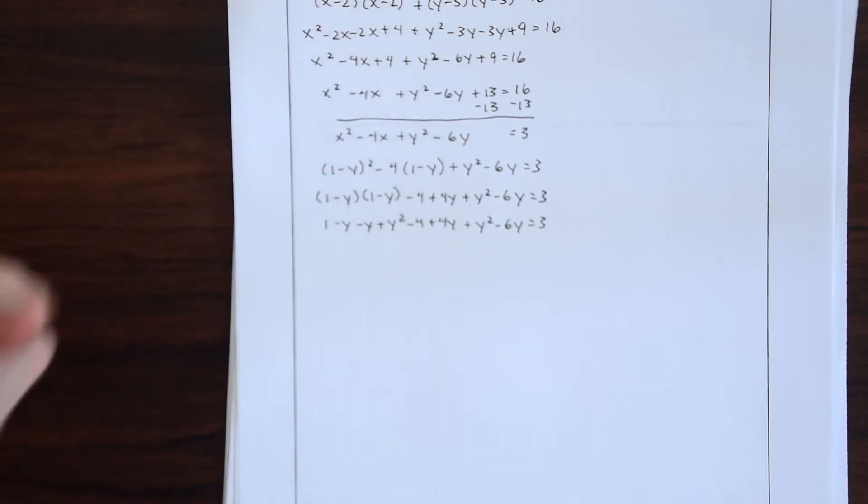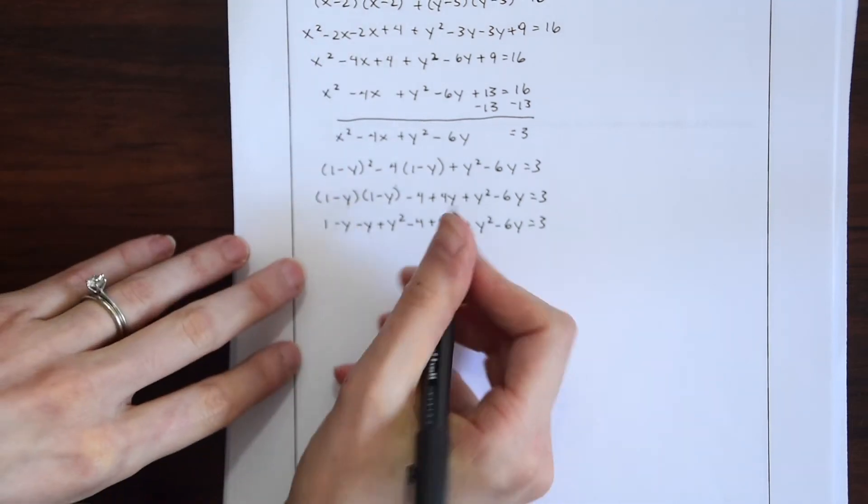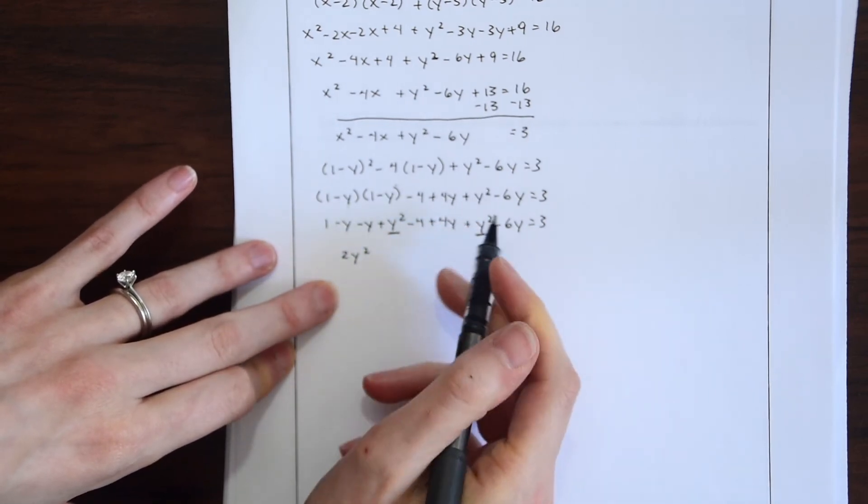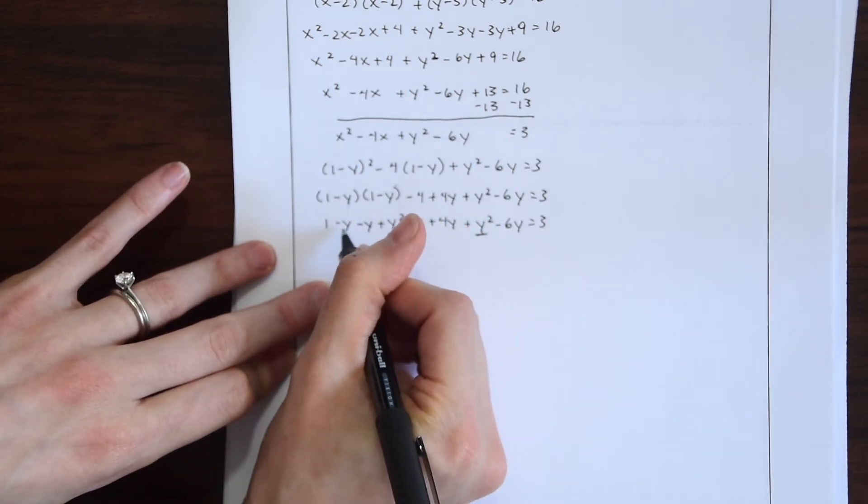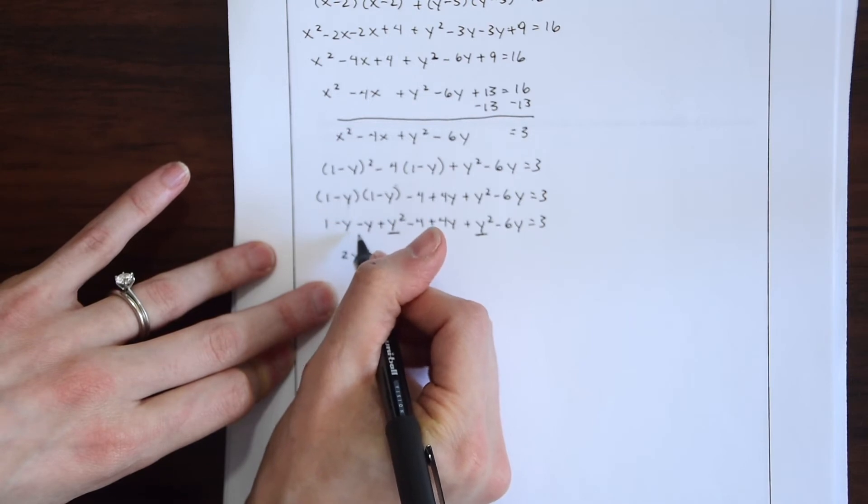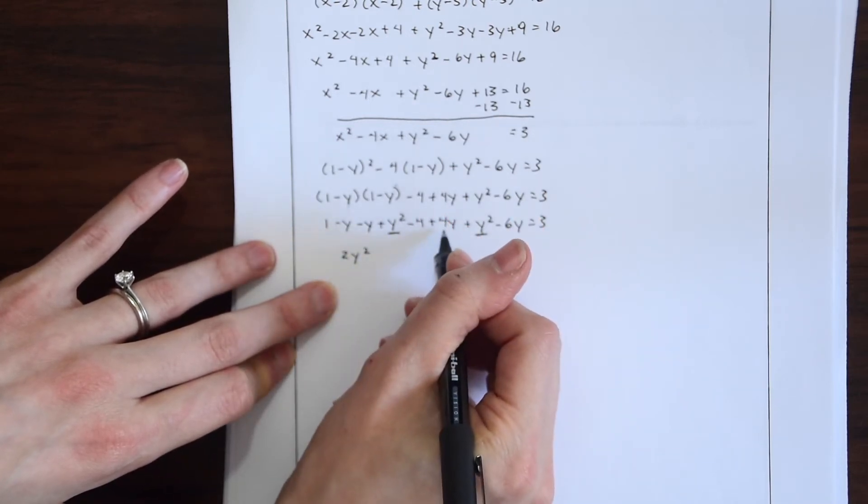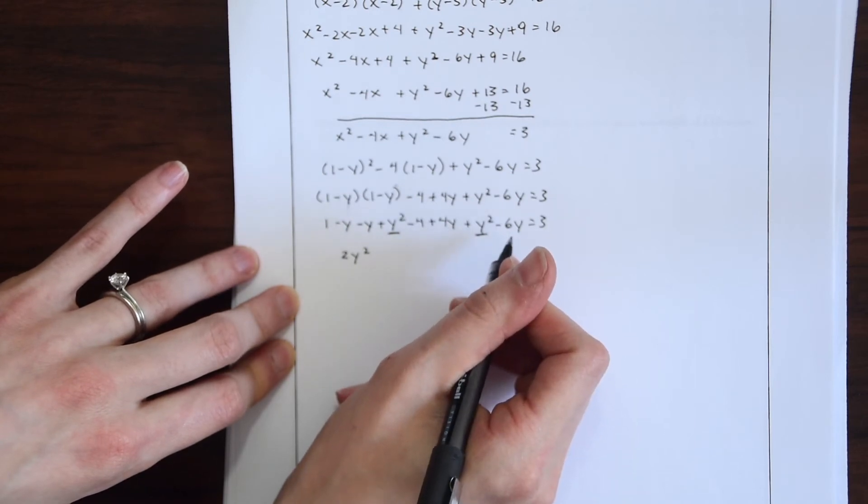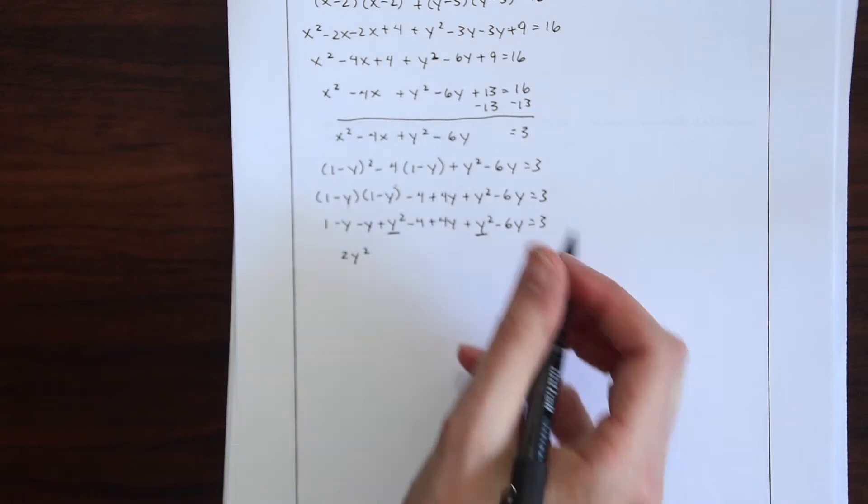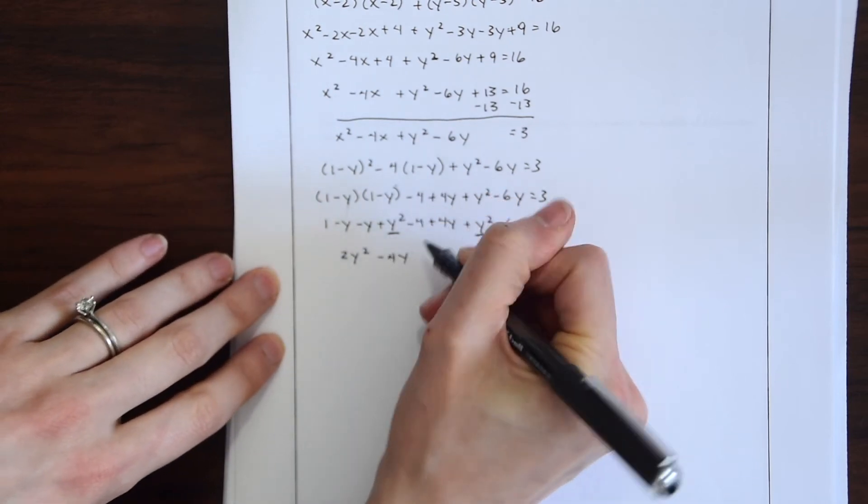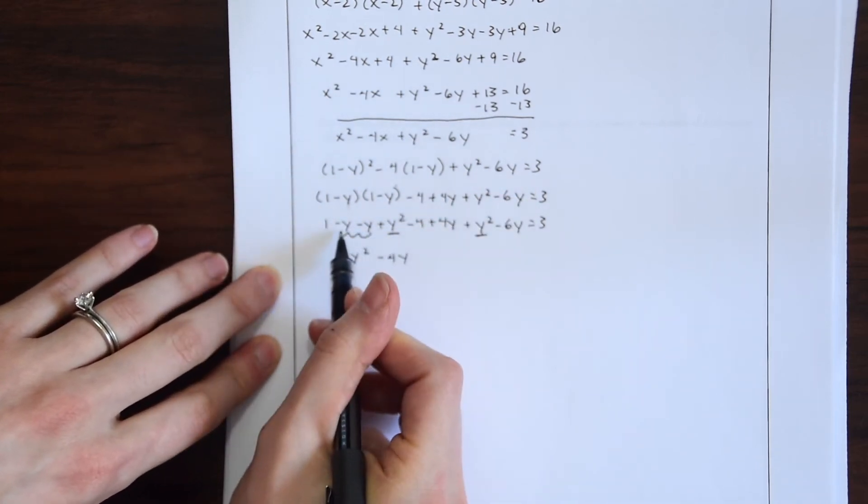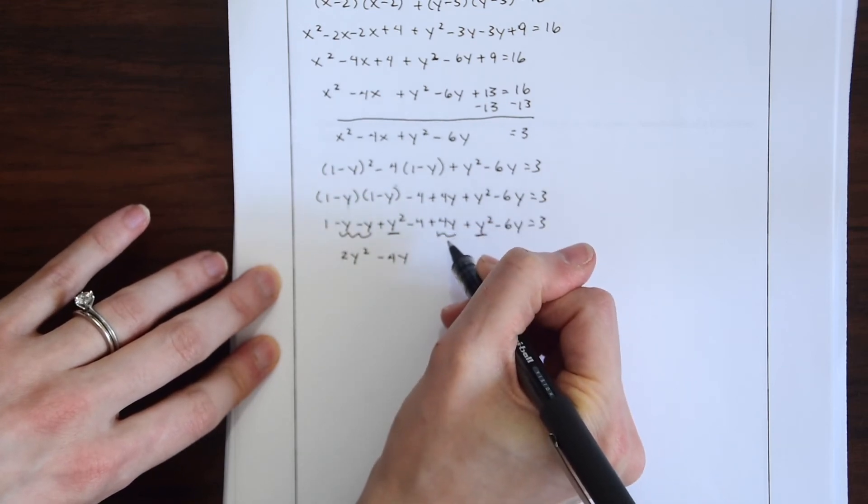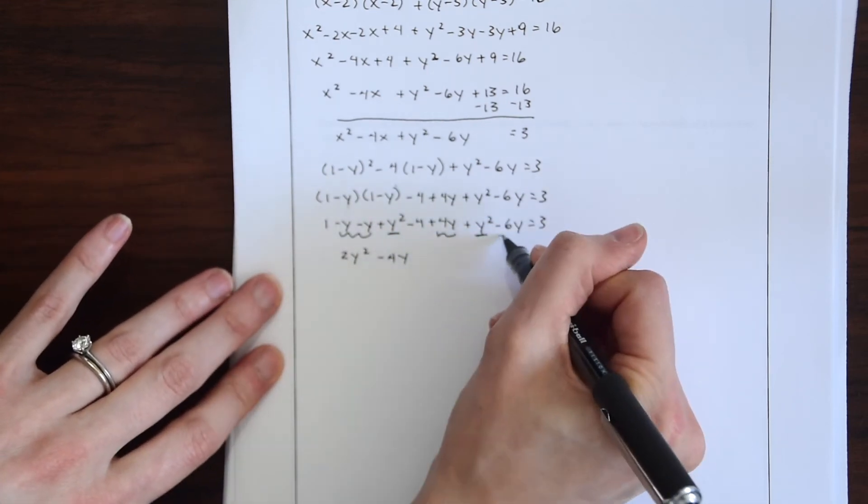So now we can look for like terms. So we have y squared plus y squared will give us 2y squared. Let's look for y's. So this is minus 2y over here. Negative 2y plus 4 will give us 2y. 2y minus 6 will give us minus 4y. So that took care of what squiggle them.